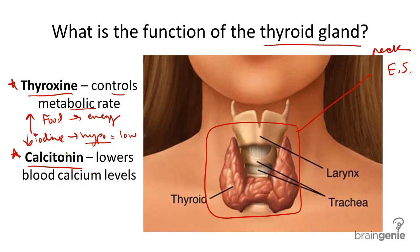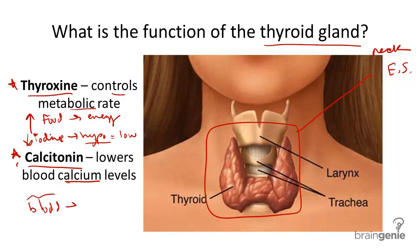The other hormone produced by the thyroid is called calcitonin. Like its name suggests, it is linked to calcium. The overall purpose is to remove calcium from the blood to build new bone — so blood to bone.